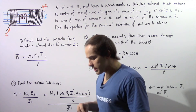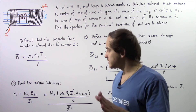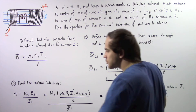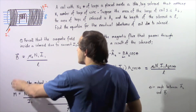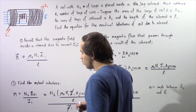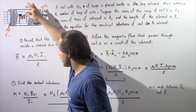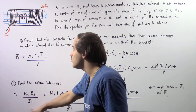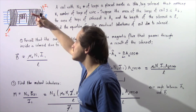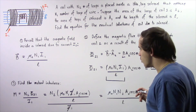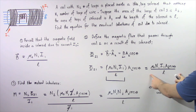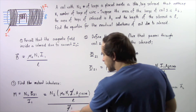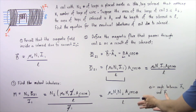Now let's move on to step 3. From our discussion on mutual inductance, the mutual inductance M of coil 2 as a result of the solenoid equals N2 times the magnetic flux through coil 2 divided by I1: M = N2 · Φ₂₁ / I1. Replacing Φ₂₁ with the equation derived in step 2, I1 appears in both the numerator and denominator and cancels out, giving us the final result.